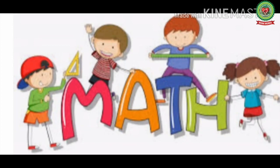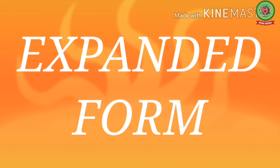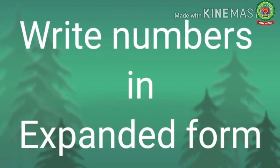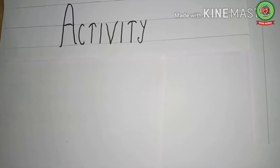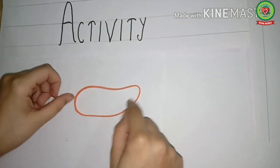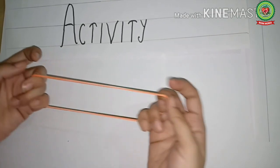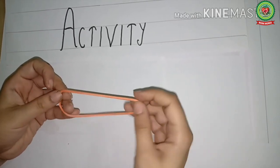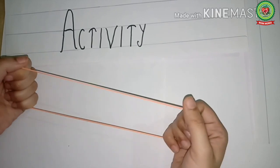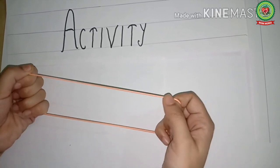Hello kids, welcome to the maths class. Today we are going to do the topic expanded form. The main objective of this learning is how to write numbers in expanded form. See this rubber band — if we want to increase the size of the rubber band, we will stretch it. In the same way, if we want to increase any number, we have to stretch it, and stretching means expanding.